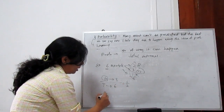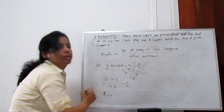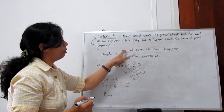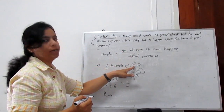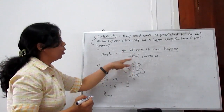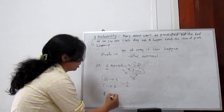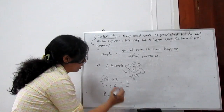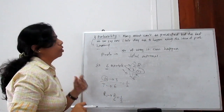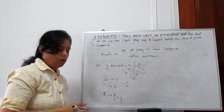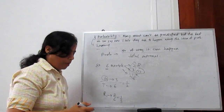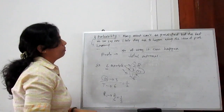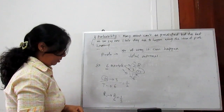Probability for getting red: the number of ways it can happen is 2, total is 6, so 2 by 6 gives 1 by 3. So this is how we can find simple probability.